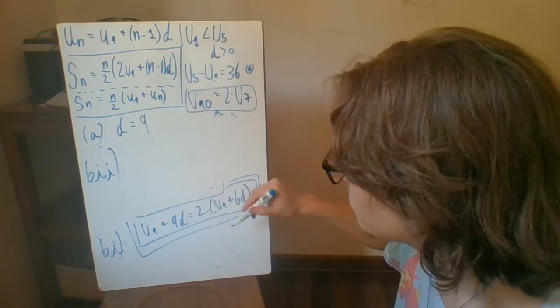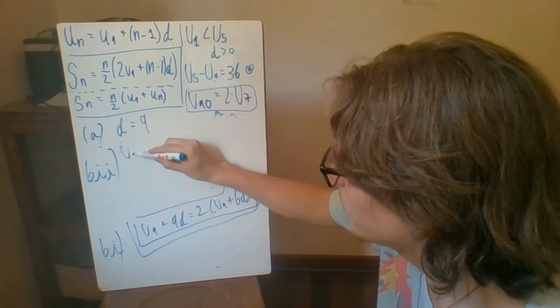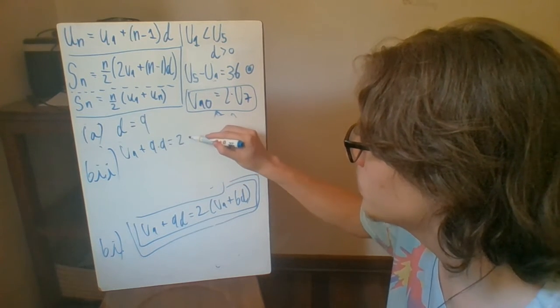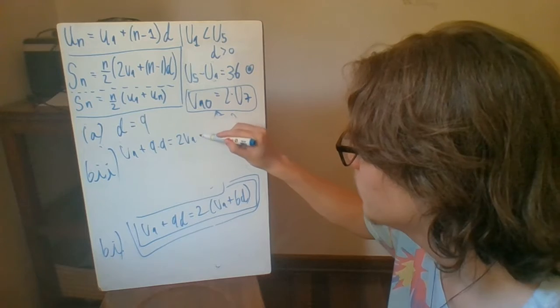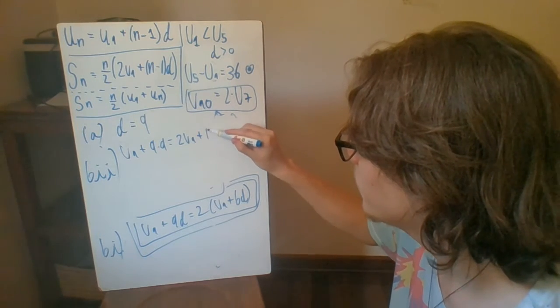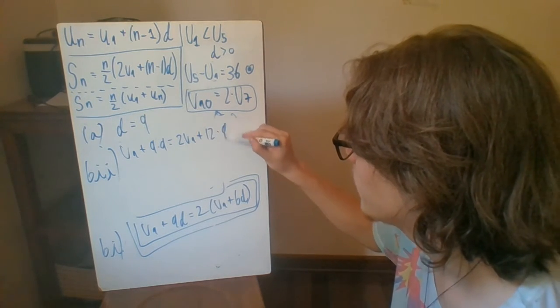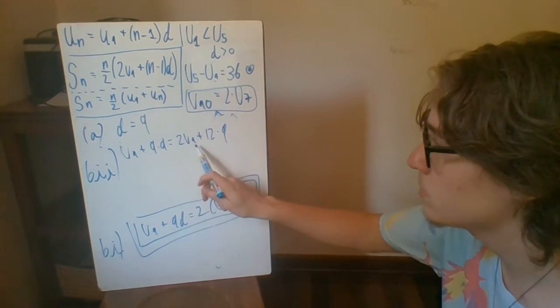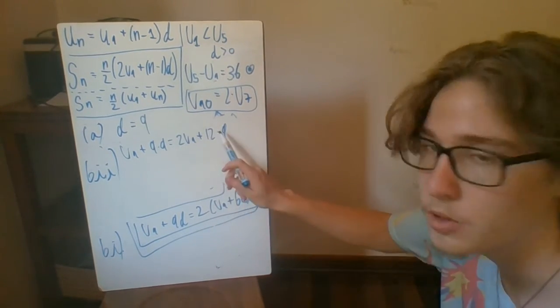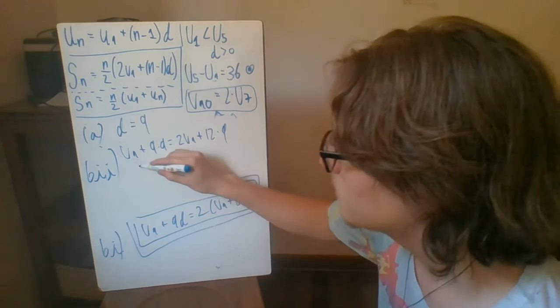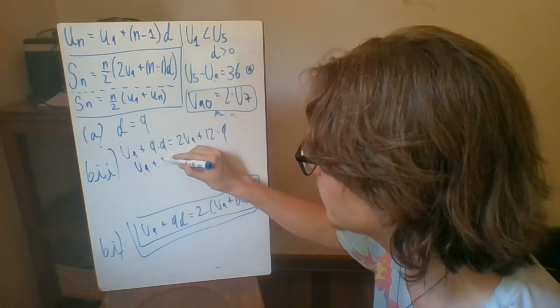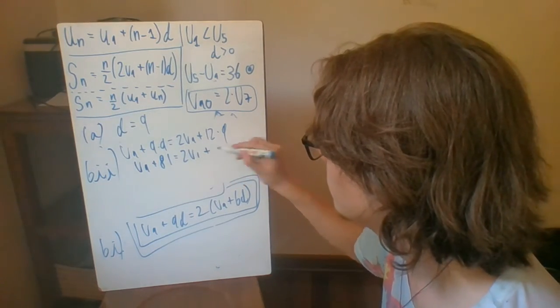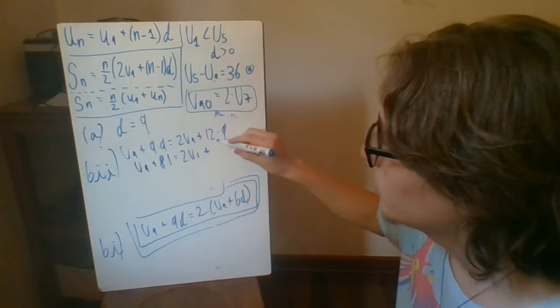So if I plug in for d here, I end up with u1 plus 9 times 9 equals 2 times u1 plus 12 times 9. Here I distributed the 2 over. So that's why it's 2u1 and 2 times 6 gives us 12. And so we're working this around a little bit. u1 plus 81 equals 2u1 plus 108.